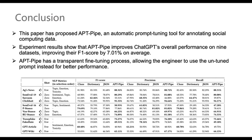Finally, our experimental results demonstrate that APTPipe significantly enhances ChatGPT's performance across 9 out of 12 datasets, with an average F1 score improvement of 7.01%.